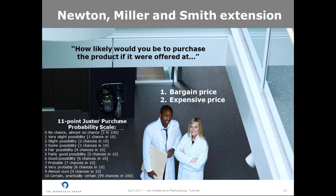Respondents indicate their purchasing intention using the 11-point Juster purchase probability scale, which has been found to be highly effective as a predictive measure of future purchase behavior. The Juster scale shows both numbers and text descriptions. Remember Murphy's Law and make sure to use real-time quality control to avoid irrational responses regarding purchase likelihood. By definition, respondents are expected to report highest likelihood to purchase at their bargain price, so purchase intention at their expensive price must be lower than or equal to purchase intention at the bargain price. This additional data gives you an estimation of the relative demand at each price, which allows you to approximate revenues.